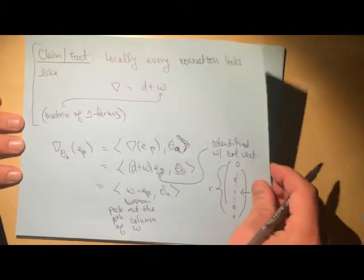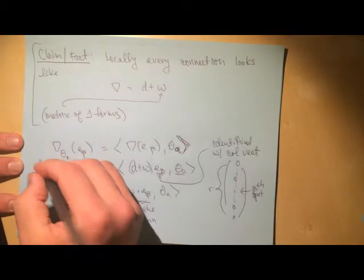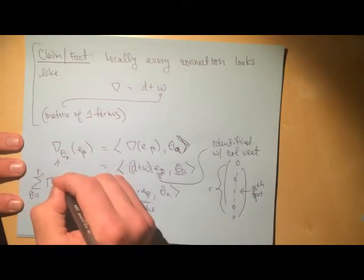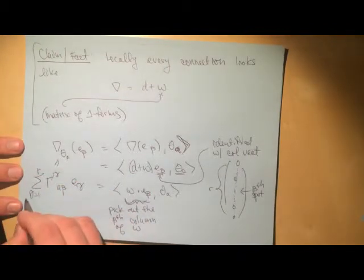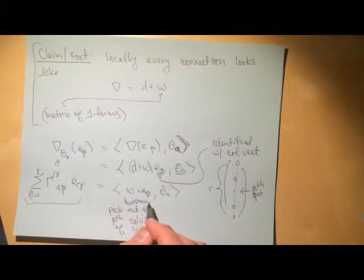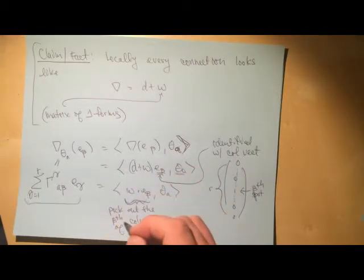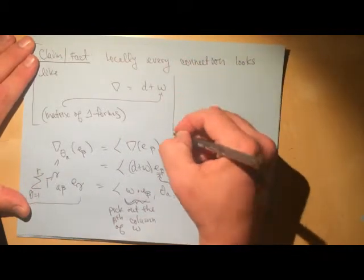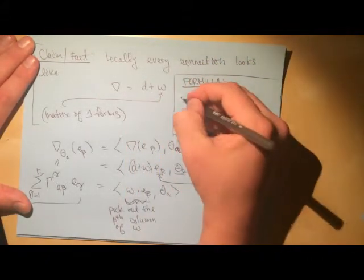So this guy here, we just have omega times e beta, so d, remember, d is locally this trivial vector bundle, or this locally the basic connection, so d applies component-wise, and component-wise on this guy, everything's just zero, so we just get here, and then we have this theta a here, so that we have this tangent vector here. And so this thing really, what this does is it picks out the beta-th column of omega.